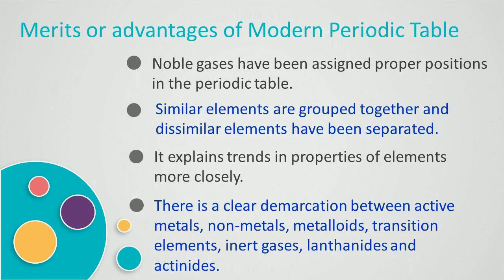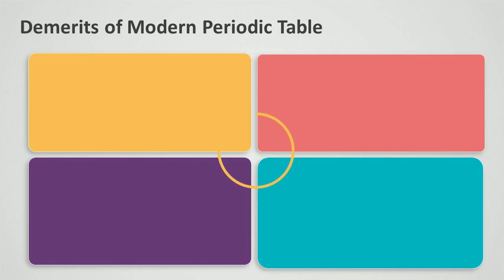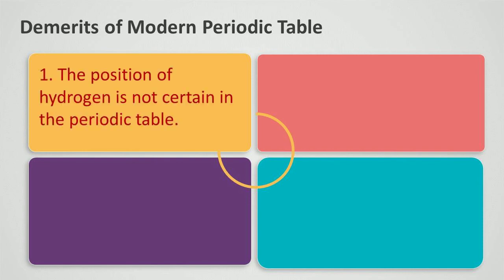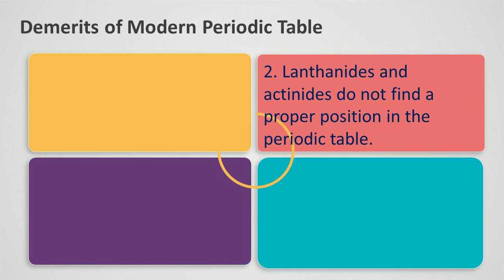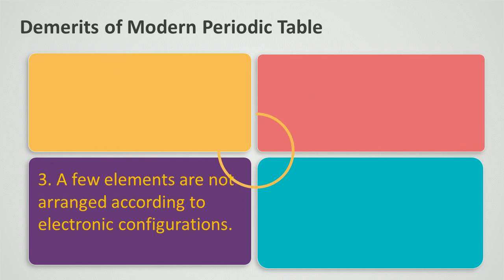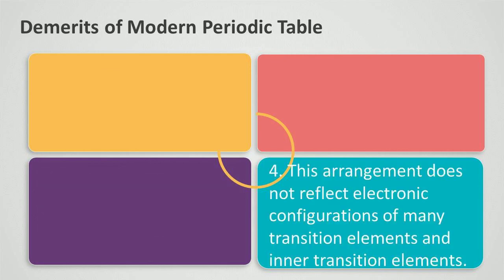This table has made the study of elements very simple and systematic, but it also has some demerits. The first demerit is that the position of hydrogen is not certain in the periodic table because the properties of hydrogen are similar to both alkali metals and halogens. Lanthanides and actinides do not find a proper position in this periodic table. A few elements are also not arranged according to their electronic configuration, and this arrangement does not reflect the electronic configuration of many transition elements and inner transition elements.